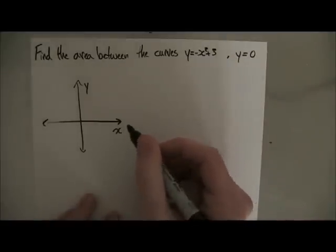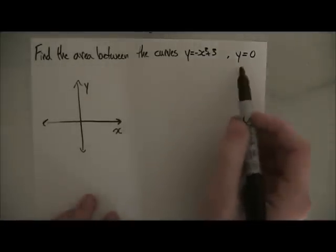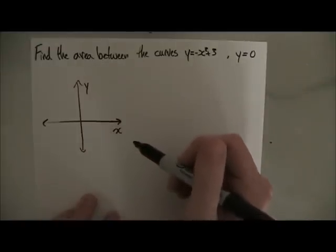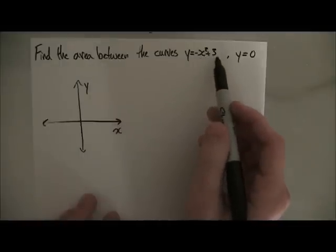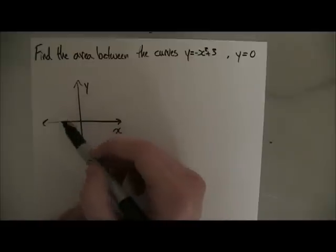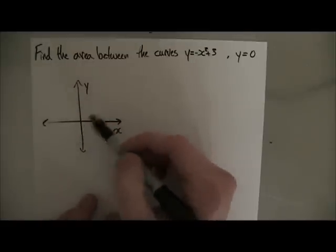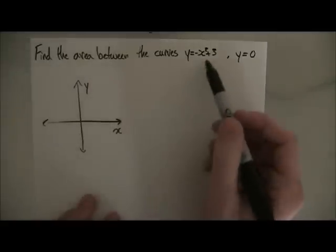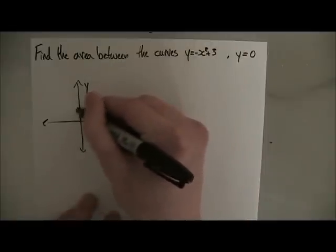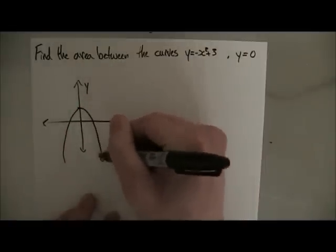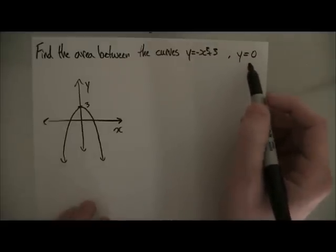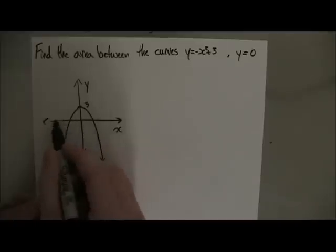The first thing you want to do when finding the area between curves is to sketch out these functions to show exactly what area you're calculating. We have minus x squared plus three — x squared is a parabola that goes up, minus x squared is a parabola that goes down, and we raise it up three. So it's going to be pointing downwards with its vertex at y equals three. Our other curve is y equals zero, so we just have a straight line going through there.